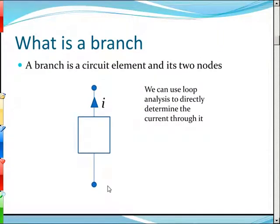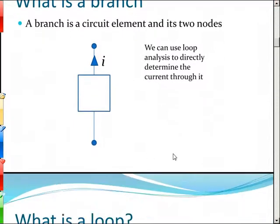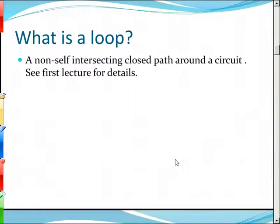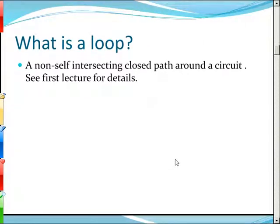Do you remember what a branch was? Very good — the circuit element and its two nodes. So, what is a loop? A loop is a non-intersecting closed path around a circuit.